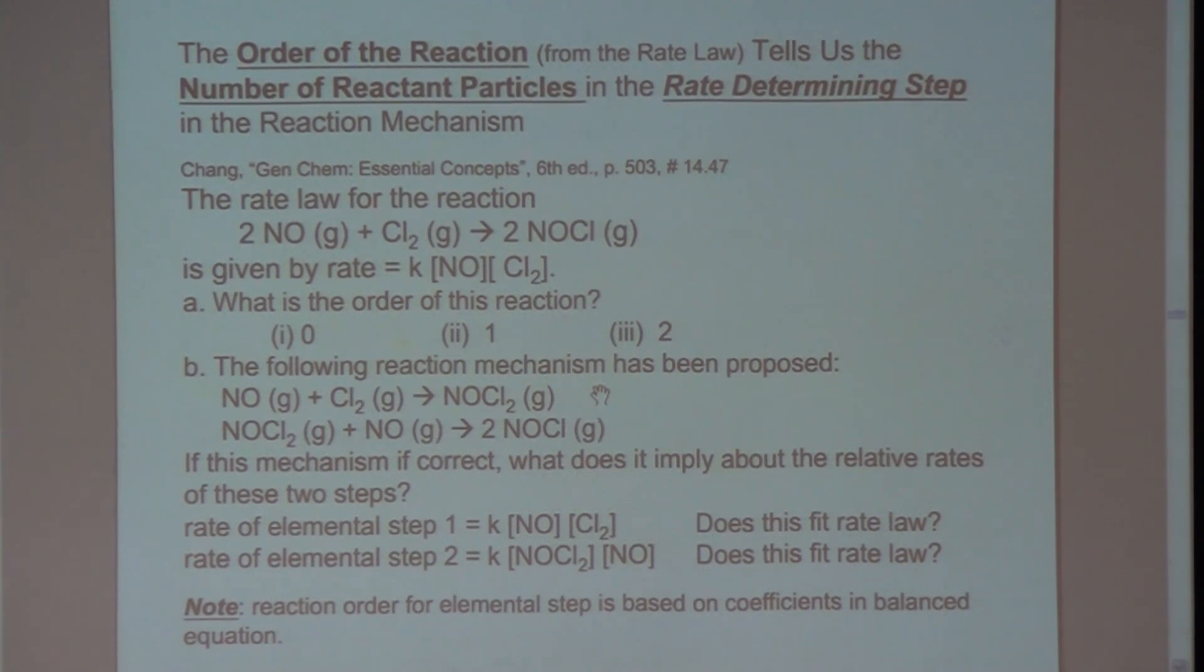Now to determine a reaction mechanism, you have to do experiments to see if you can detect these reaction intermediates. So for example, note that NOCl2 is the product of this first reaction. If you can do an experiment that detects this compound, that suggests that this could be the mechanism of this reaction. If you don't detect this, that means, well, you've got to think of another mechanism for that reaction.